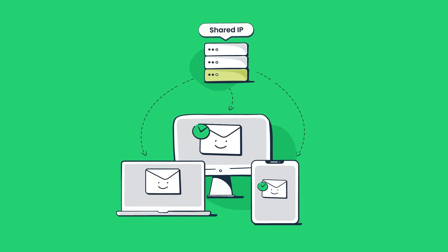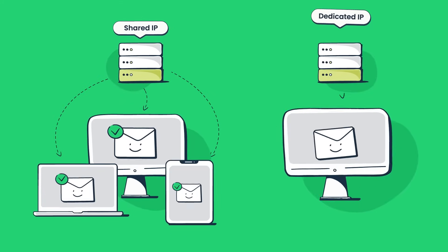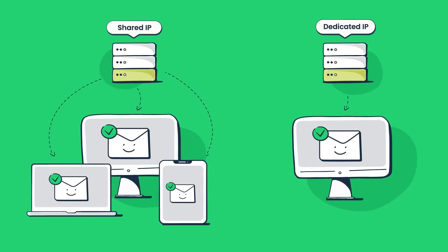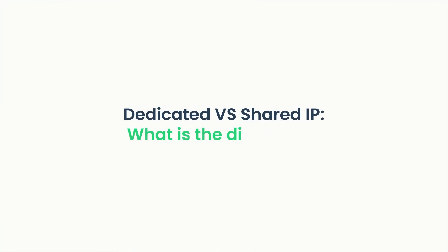What's a shared IP address? What's a dedicated one? What's the difference between the two? And how do they influence email deliverability? Stick around to find out!